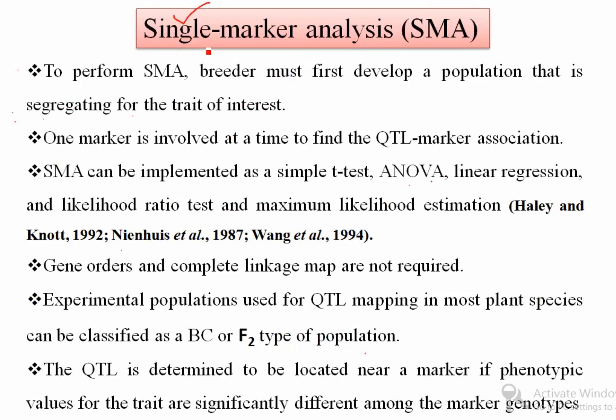We use one marker at a time to detect the QTL — the genomic region responsible for variation in the phenotypic trait. To perform single marker analysis, the breeder must first develop a population that is segregating for the trait of interest. The breeder can use an F2 population or a backcross mapping population, as these are segregating mapping populations. For all QTL mapping methods, a segregating population is essential.